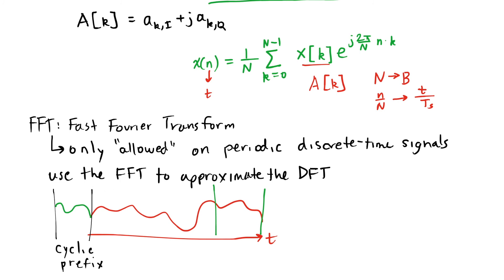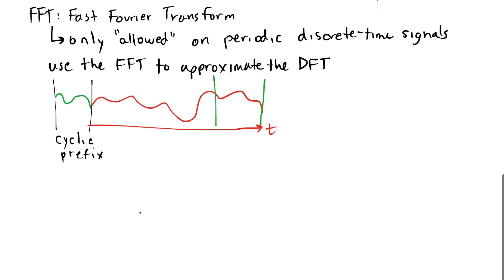Well, it's a trade-off here. We're allowing the signal to contain some redundancy so that the FFT is closer to what the discrete Fourier transform is. So that we have a somewhat periodic signal that then the FFT becomes approximately the right answer for the DFT.